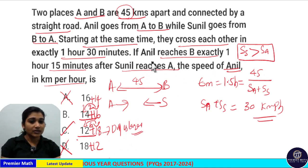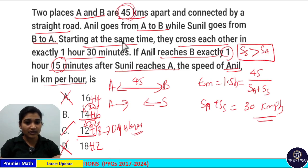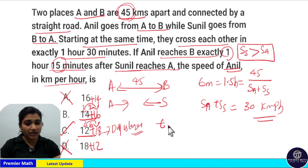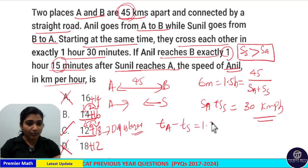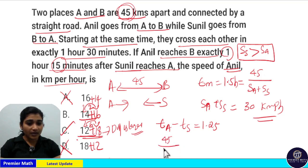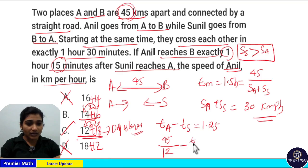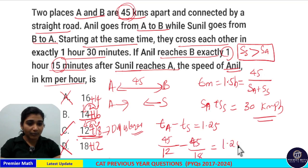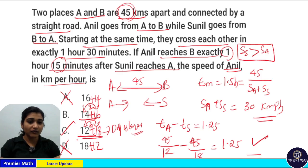We choose the larger difference because Anil takes 1 hour 15 minutes more than Sonil to cover the same distance. The time difference between Anil and Sonil is 1.25 hours. We can verify option C: time taken by Anil is 45 divided by 12, minus time taken by Sonil which is 45 divided by 18, which clearly equals 1.25 hours. So option C is confirmed as the correct answer.